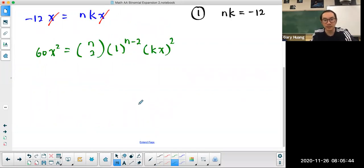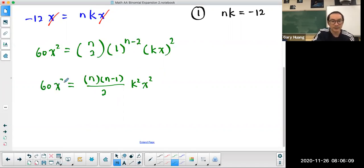Now this one requires a little bit of work, because n choose 2, according to the definition, is going to be n times n minus 1 over 2 factorial, which is just 2. This is 1. This is going to be k squared x squared. And all of that is going to equal to 60x squared.